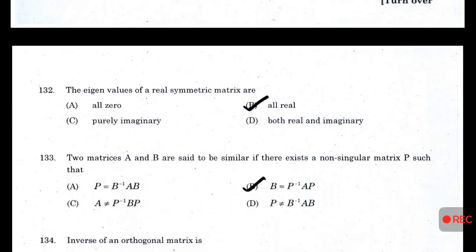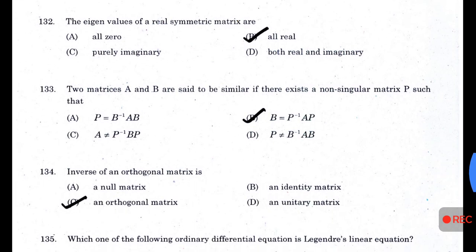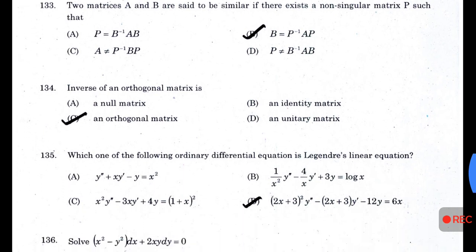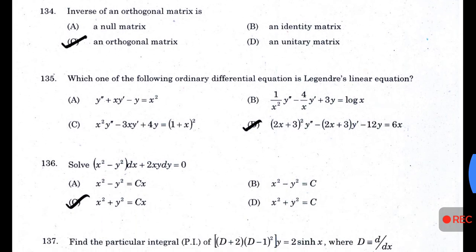The eigenvalues of a real symmetric matrix are — answer B — all real. Two matrices A and B are said to be similar if there exists a non-singular matrix P such that B = P⁻¹AP. The inverse of an orthogonal matrix is an orthogonal matrix. Which of the following ordinary differential equations is Legendre's linear equation? — Answer D.